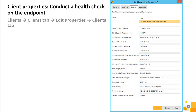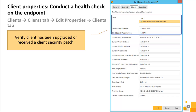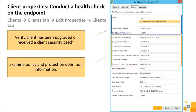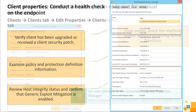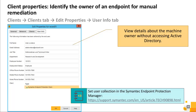Use the Clients tab to conduct a health check of the endpoint. In an active deployment, verify if the client has been upgraded or received a client security patch. To ensure the client is healthy, examine policy and virus definition information. You can also review the host integrity status and confirm that generic exploit mitigation is enabled. For manual remediation, use the User Info tab to view details about the machine owner without having to go into Active Directory.